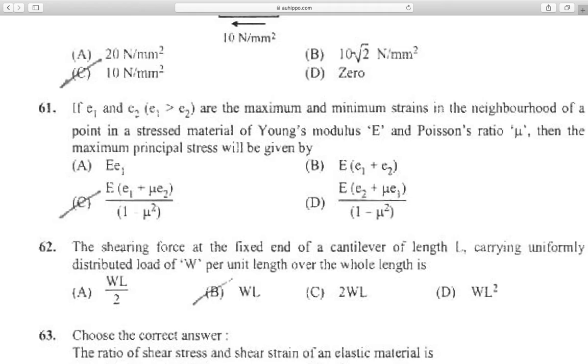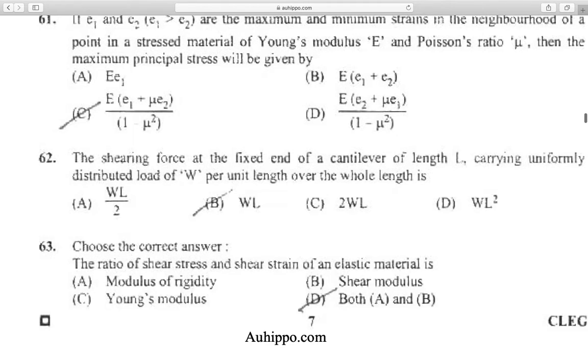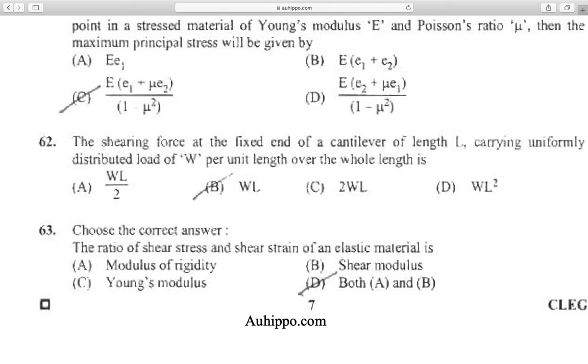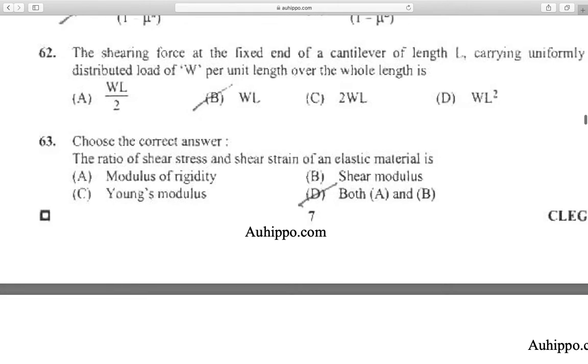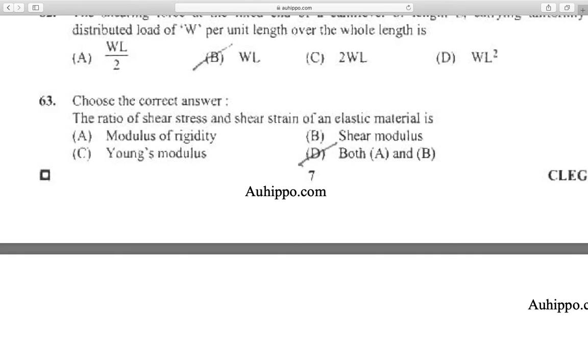Question 62: The shear force at the fixed end of a cantilever of length L carrying a uniformly distributed load of W per unit length over the whole length is WL.